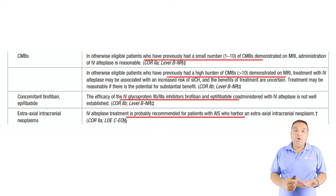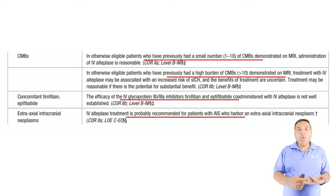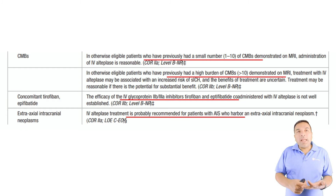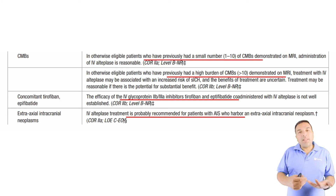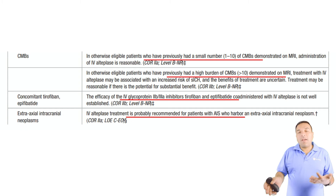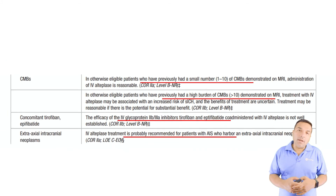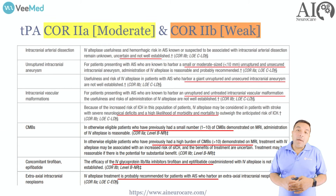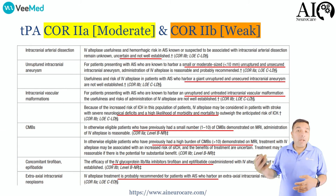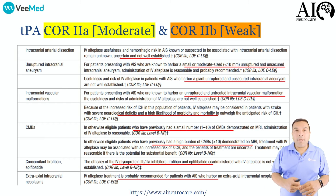For patients on very short-acting GP2B/3A inhibitors like tirofiban, you may consider stopping the medication, waiting five minutes, and then giving TPA. The level of evidence is weak, but if the patient would benefit — depending on the amount of disability — go ahead and give TPA.